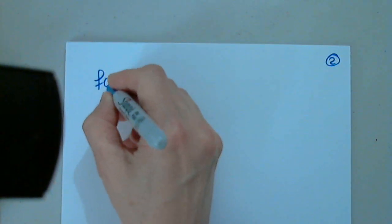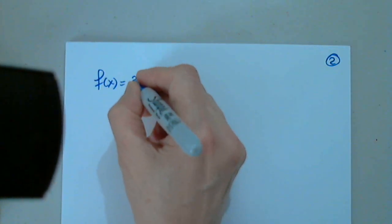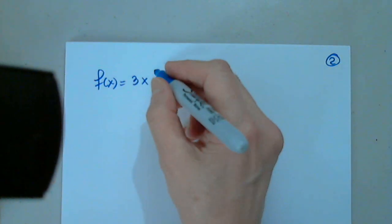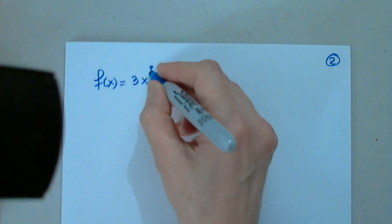So I just want to talk about one topic, and then we'll come back to everything else. So let's say we have a function f of x equals, let's say, 3x to the third minus 4.